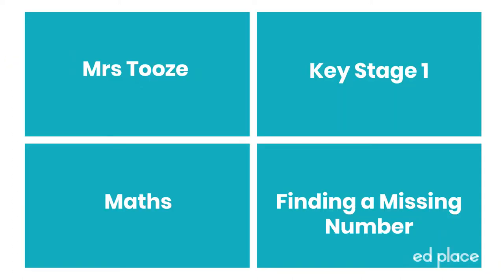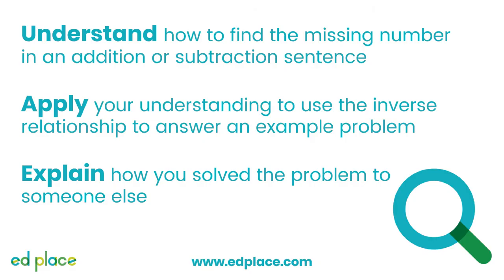Welcome to today's year one and two maths lesson on finding missing numbers with Mrs Toos. By the end of today's lesson we are aiming to have achieved either one or all of the following three steps: understand how to find the missing number in an addition or subtraction sentence; apply your understanding to use the inverse relationship to answer an example problem; and explain how you solved the problem to someone else.